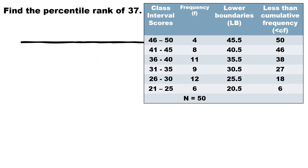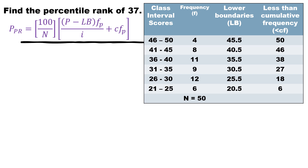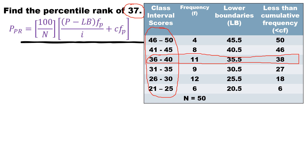We need a frequency distribution table, and we are asked to find the percentile rank of 37. Using the formula, we first set a point of reference by locating which class interval contains 37. Upon observing, we can see that 37 falls under the class interval 36 to 40. This will be the region we use as our point of reference for substitution.